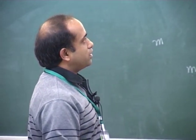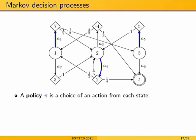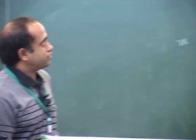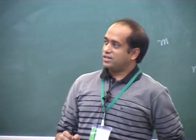You can show that a randomized policy will not help; if there is an optimal randomized policy, there is also a deterministic one. So we focus on deterministic policies. Before continuing, I will describe a compact graphical representation of an MDP.